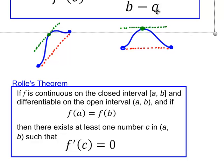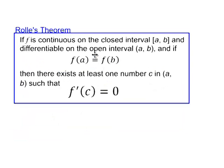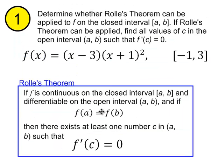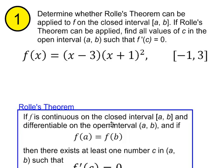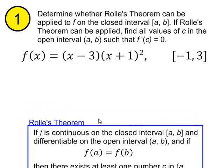So with that being said, let's go back up to that first exercise. Determine whether Rolle's theorem can be applied on the closed interval from a to b, in this case from negative one to three. And if Rolle's theorem can be applied, find all values of c on the open interval such that the derivative is zero. As far as determining whether Rolle's theorem can be applied, for the sake of this video you can anticipate that the answer is yes.